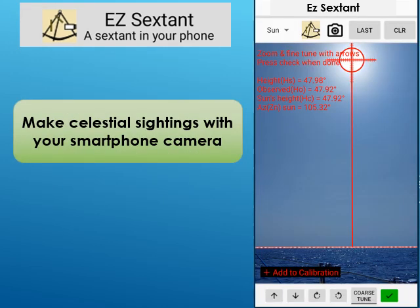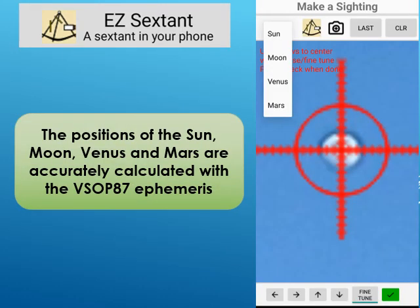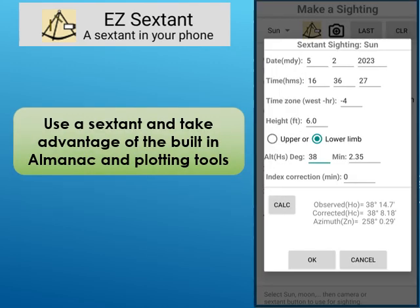Navigating without a GPS is achieved by using your smartphone camera to make celestial sightings. To achieve accurate sightings, a simple one-time camera calibration is required — calibration is covered at the end. The positions of the Sun, Moon, Venus, and Mars are accurately calculated with the VSOP87 Ephemeris. You can also use your sextant to make a sighting, then use the app's built-in almanac and plotting tools.